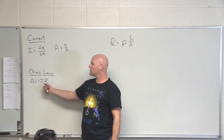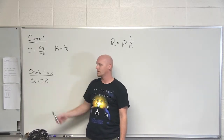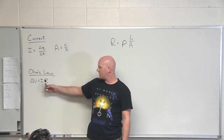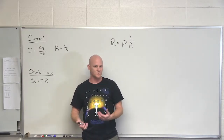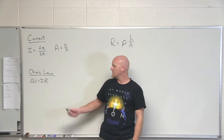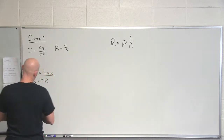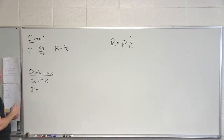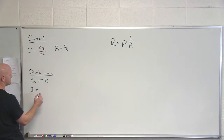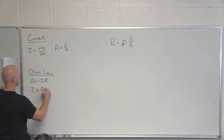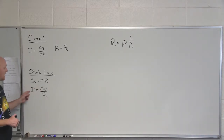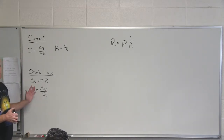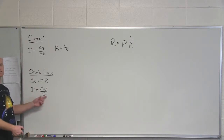Ohm's Law relates the potential difference we apply across a wire, the current flowing through the wire, and the resistance — either in the wire itself or from an external resistor in the circuit. If we rearrange and solve for I, current equals delta V divided by R. Current is directly proportional to potential difference — a bigger potential difference leads to a bigger current — and inversely proportional to resistance. Resistance is exactly what it sounds like: it resists the flow of current. The bigger the resistance, the less current you get.